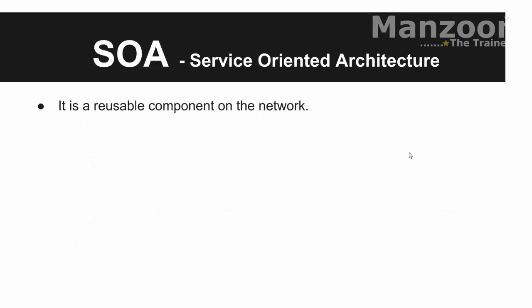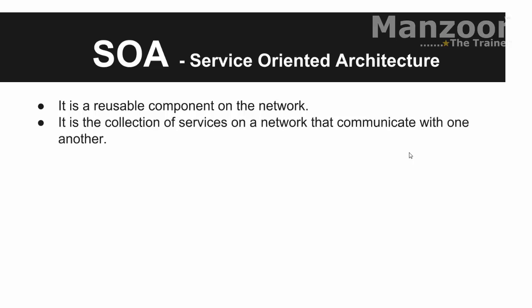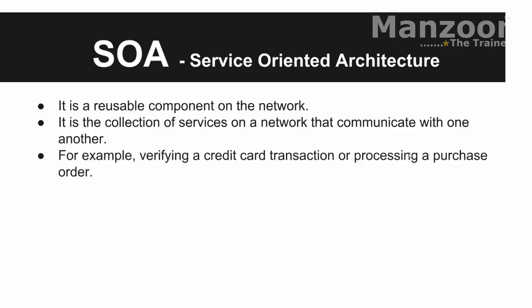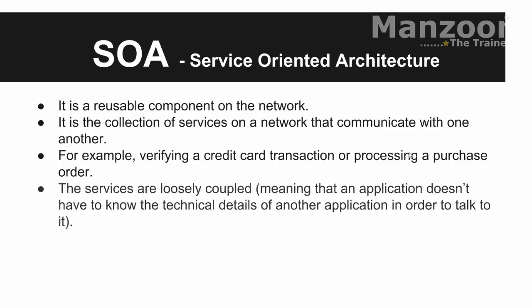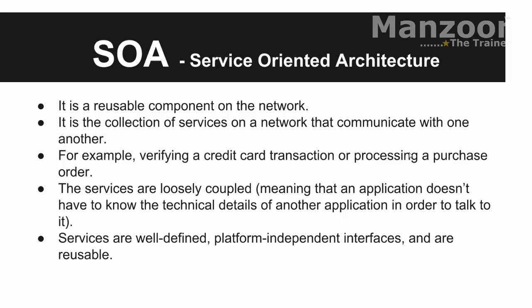Now you can see that it is a reusable component on the network. It is a collection of services on a network that communicate with one another — for example, verifying a credit card transaction. The services are loosely coupled, meaning an application does not have to know the technical details of another application to talk to it — like a PHP application talking to a .NET application, where they just need to know the class and method to call. Services are well-defined and platform-independent — a PHP or Java application can interact with a .NET application — and they are reusable.